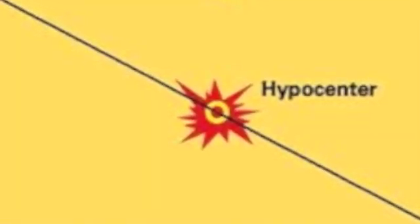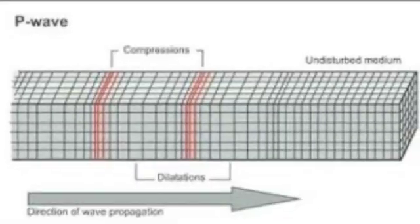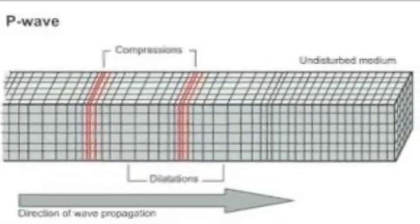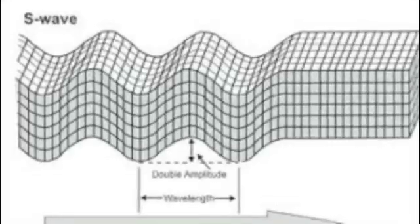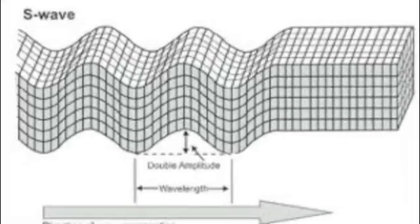The hypocenter of an earthquake marks the spot where the energy was first released. Earthquakes release their power in three different waves: primary waves, which cause a sudden jolt; secondary waves, which come a few seconds after; and surface waves.